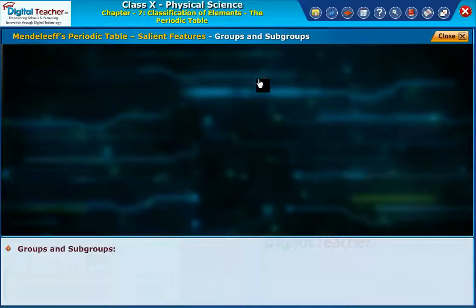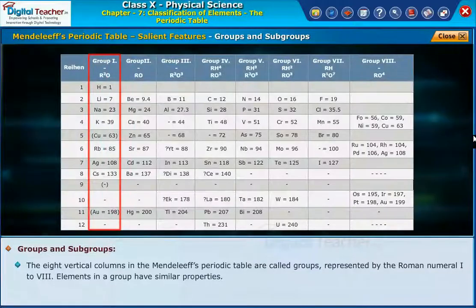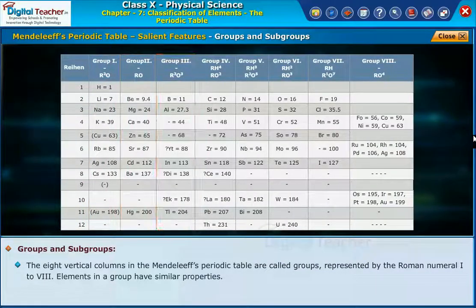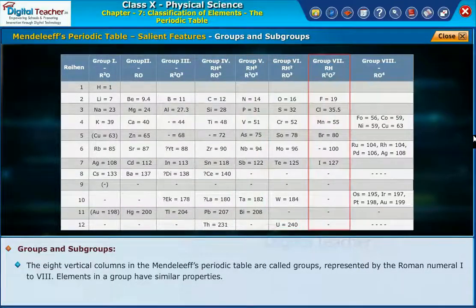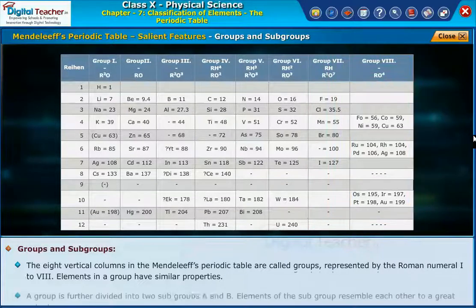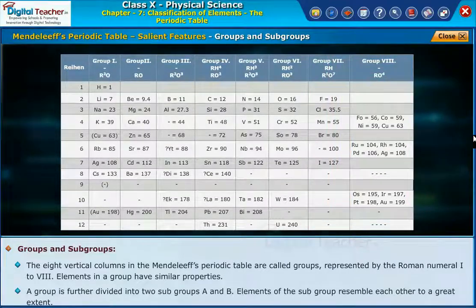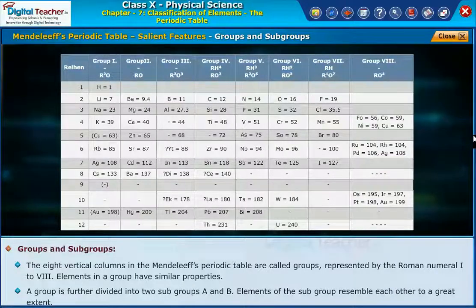Groups and Subgroups: The eight vertical columns in Mendeleev's periodic table are called groups, represented by the Roman numerals 1 to 8. Elements in a group have similar properties. A group is further divided into two subgroups, A and B. Elements of the same subgroup resemble each other to a great extent.